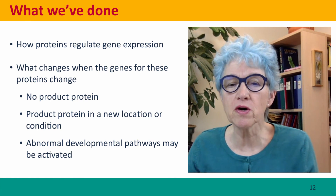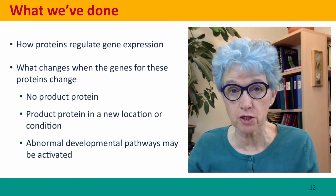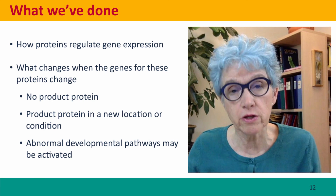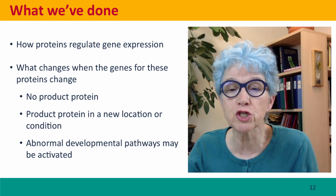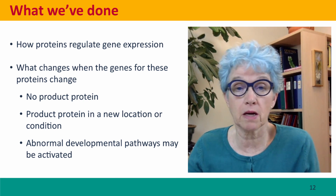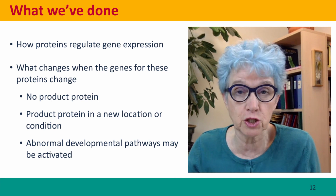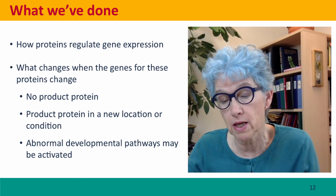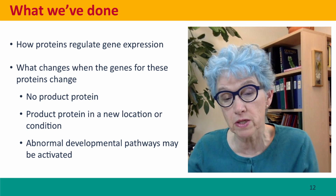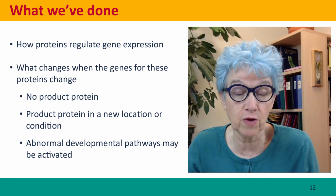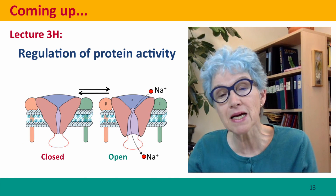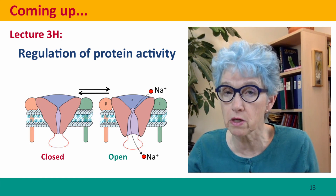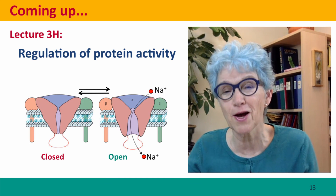So we've talked about how proteins regulate gene expression — how they regulate the transcriptional activity of RNA polymerase by telling it when to use which promoters, and what changes when the genes for these proteins are mutated. Sometimes there may be no production of regulated proteins; sometimes a protein product appears in a new location or condition; and sometimes abnormal developmental pathways are activated, producing all sorts of beautiful flowers. Coming up next, we're going to talk about how the activity of proteins is regulated — how, once the protein is made, we control what it does.